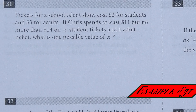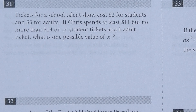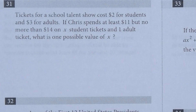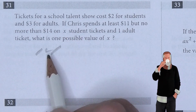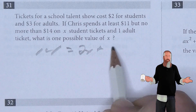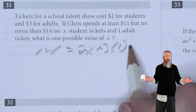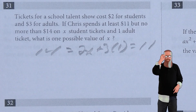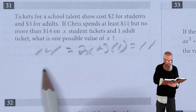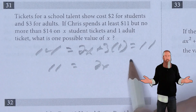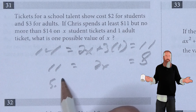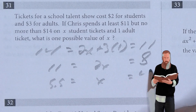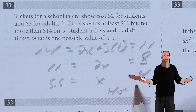Tickets for the School Talent Show cost $2 for students and $3 for adults. Chris spends at least $11 but no more than $14 on x student tickets and one adult ticket. What is one possible value of x? The maximum is 2x plus 3 equals 14, and the minimum is 2x plus 3 equals 11. Subtracting 3 from everything gives 8 is less than or equal to 2x, which is less than or equal to 11. Dividing by 2 gives 4 is less than or equal to x, which is less than or equal to 5.5. So x equals 4 or 5.